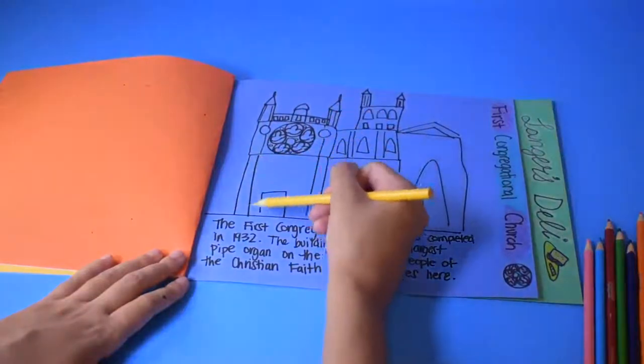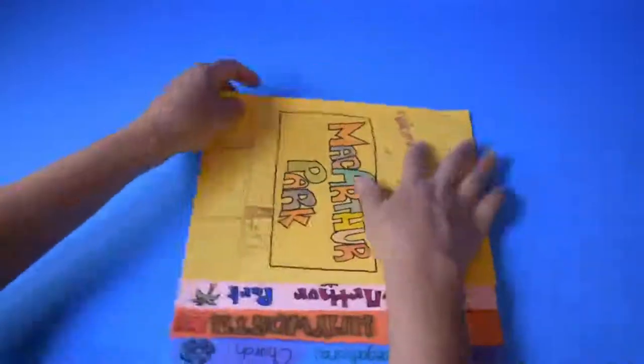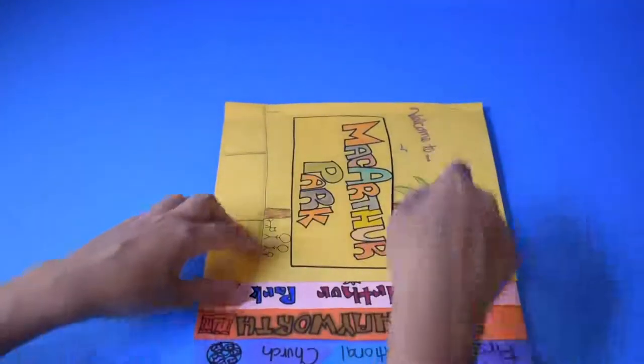Once you've drawn the place, begin coloring and add extra details. After you've completed each page, you can staple on the top and bottom edge.